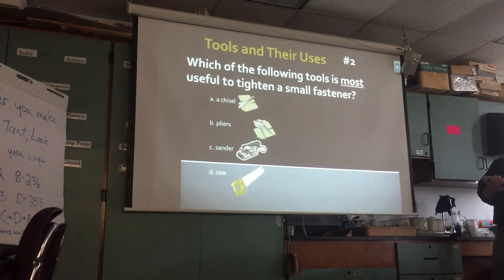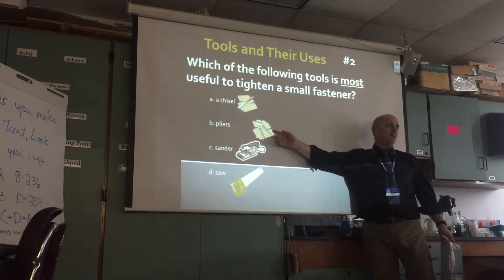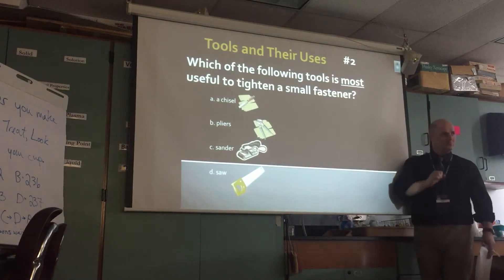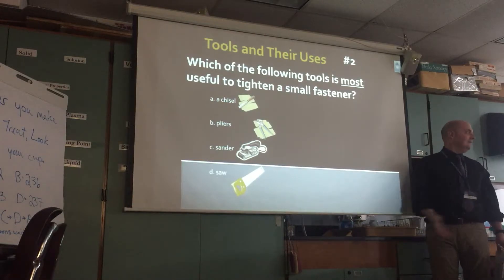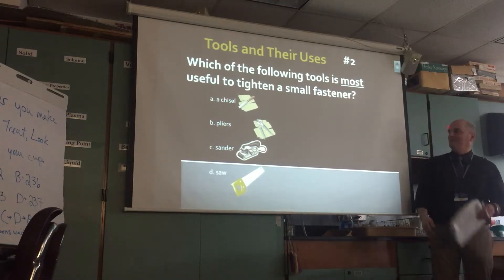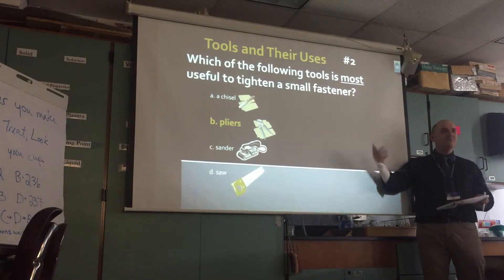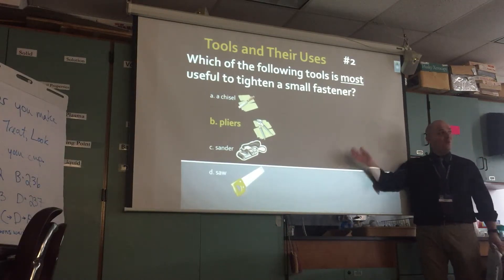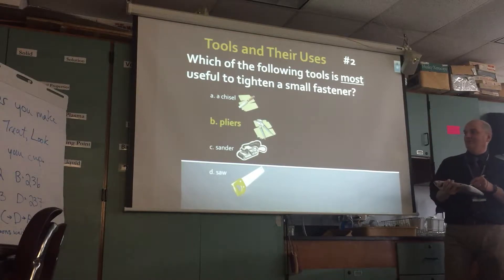A couple years after that, they got this question: 'Which of the following tools is most useful to tighten a small fastener?' You might think you're not supposed to use pliers on bolts — you're supposed to use a socket wrench or hand wrench. But of the four choices, which is the best? It's pliers. When they use words like 'most' or 'best,' they're kind of admitting these may not be ideal — of these four, what's the best?